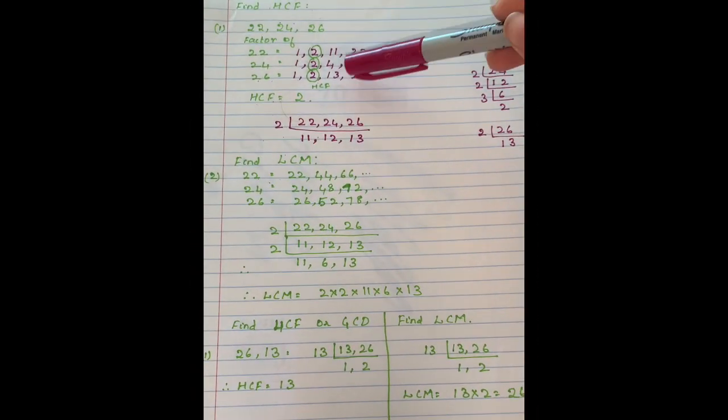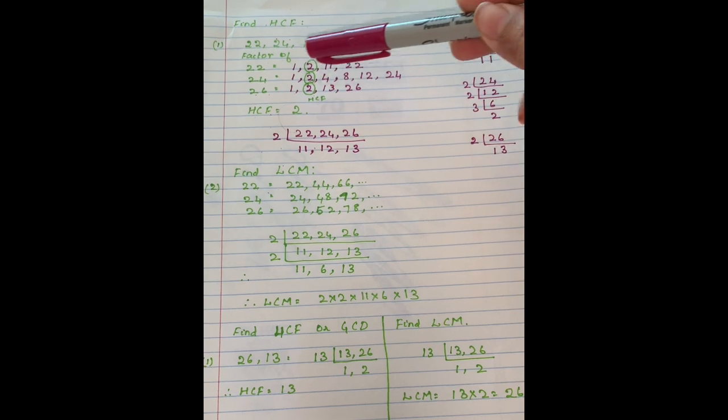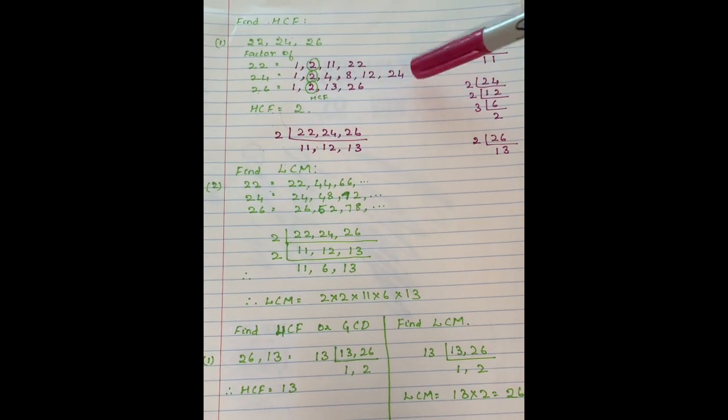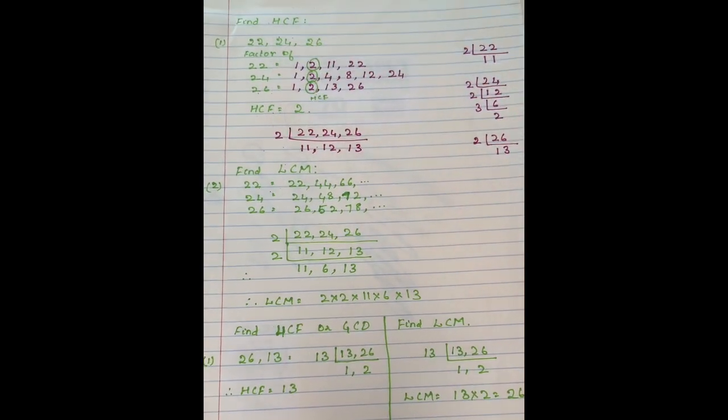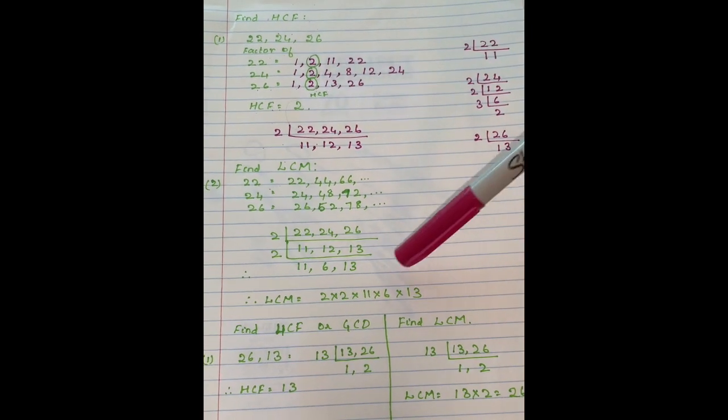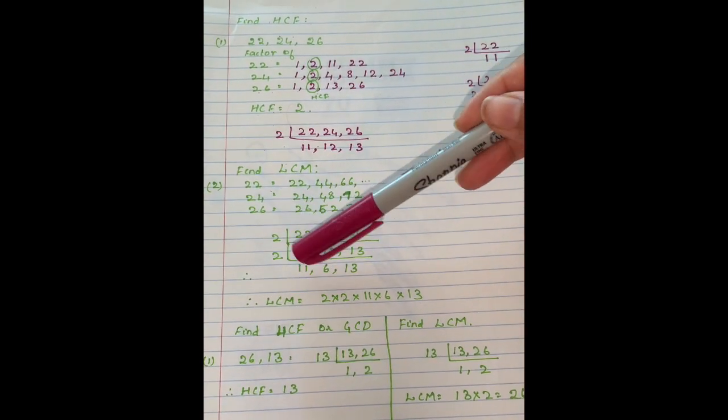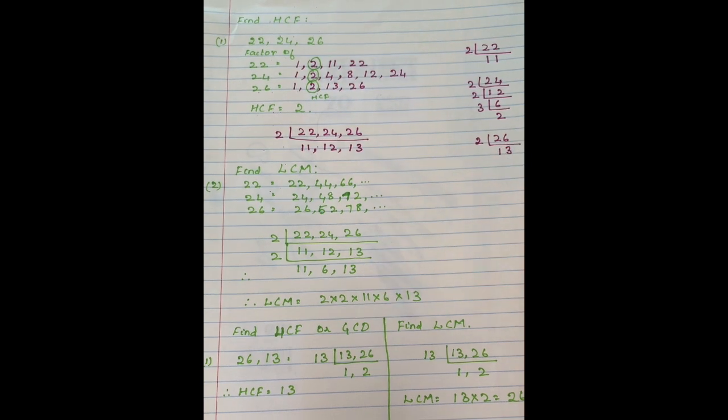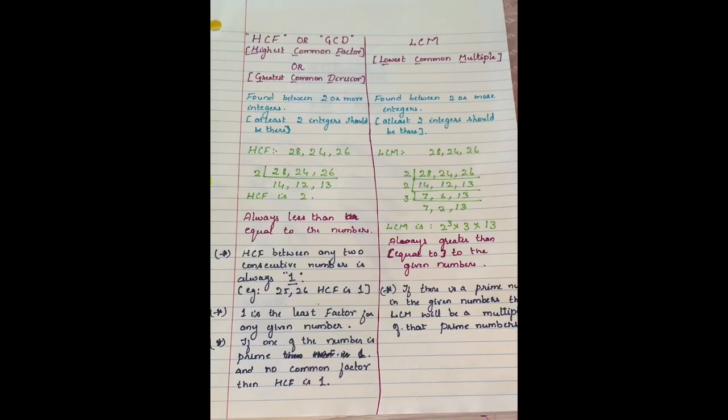More examples on HCF and LCM. These are the factors for 22, 24, 26. Here the HCF is 2, and the LCM is 2 into 2 into 11 into 6 into 13. We will move on to the important properties of HCF and LCM.